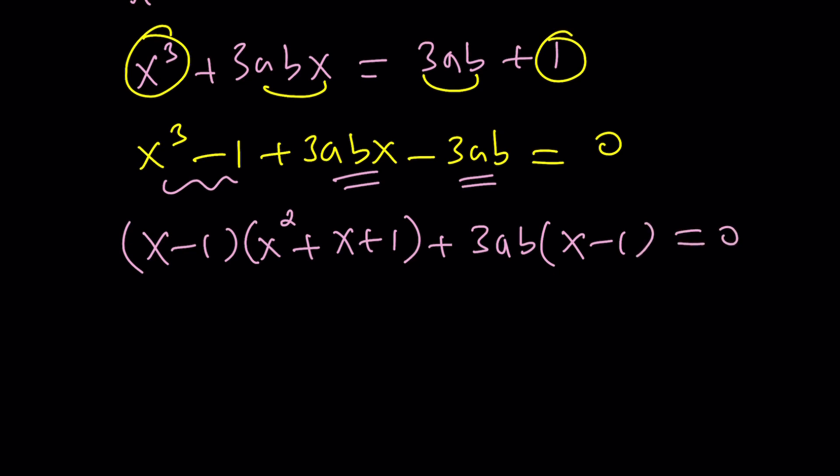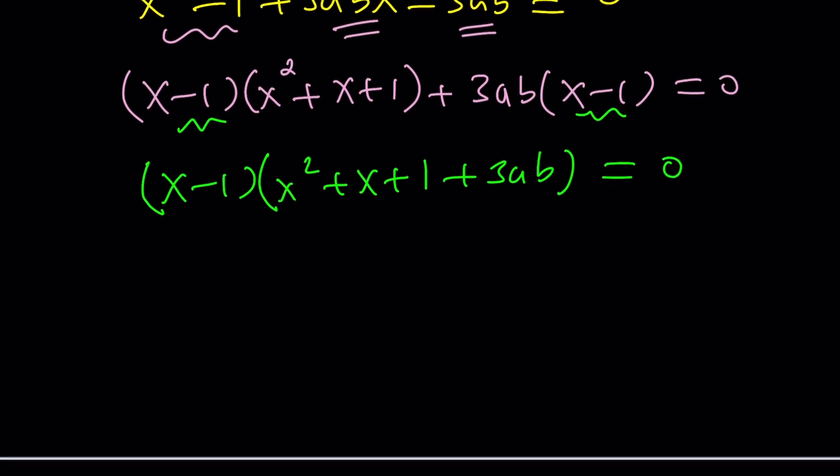x - 1 is a common factor. Maybe that's something I should have specified, because that would imply x = 1. So we factor out x - 1 and that gives us (x² + x + 1 + 3ab) = 0. From here, we get two different things. First, this is 0, so x = 1. And if this is 0, then we have to deal with the quadratic equation.